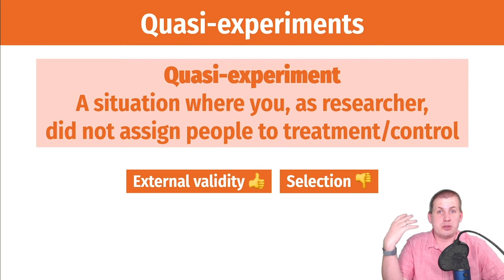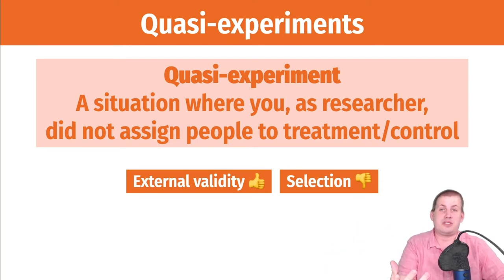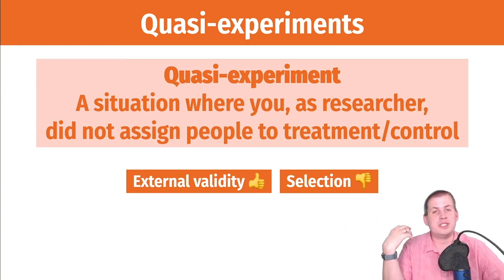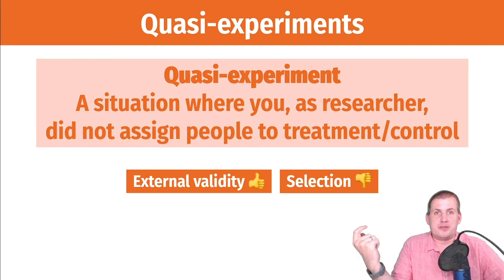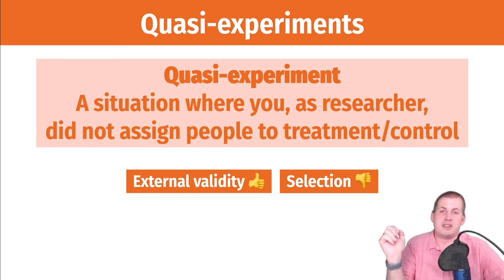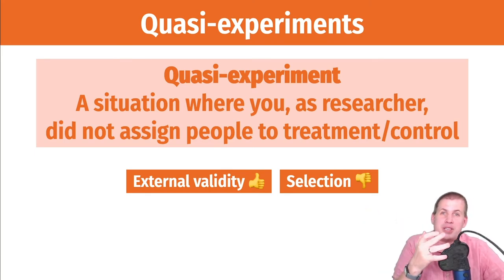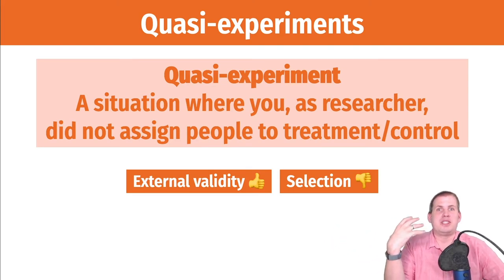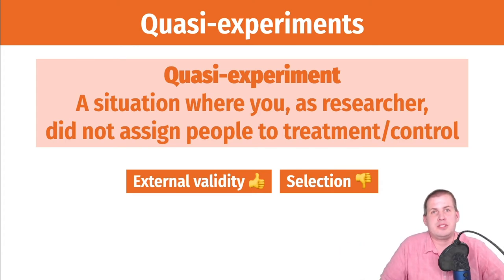You can probably generalize from quasi-experiment results fairly well. The issue with selection, though, is that people often self-select into these things. If you treat hurricane evacuation as a quasi-experiment, you'd have to assume people randomly choose which state to go to — but they probably go somewhere with family or friend connections. There are systematic reasons for their choices, so self-selection is still built into the process of dividing people into treatment and control.